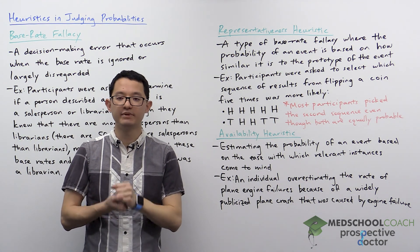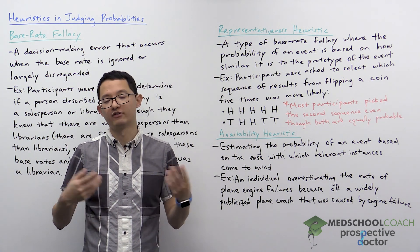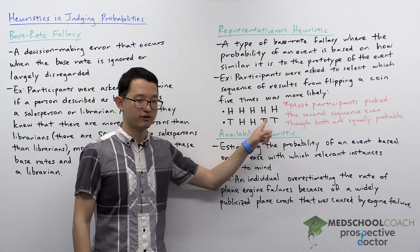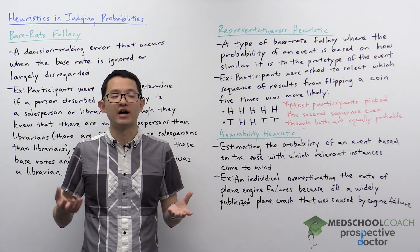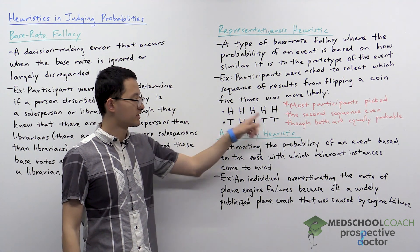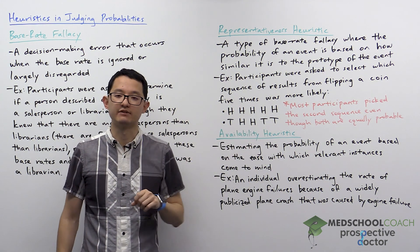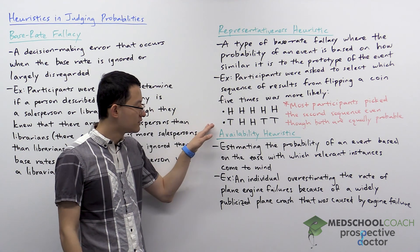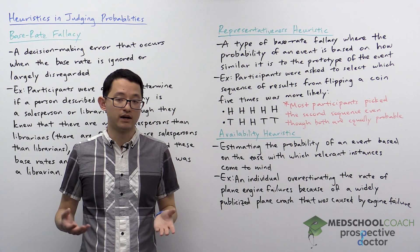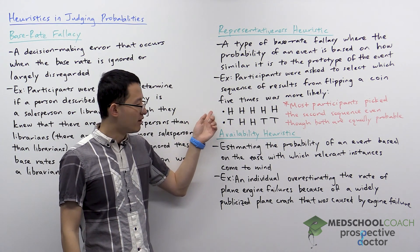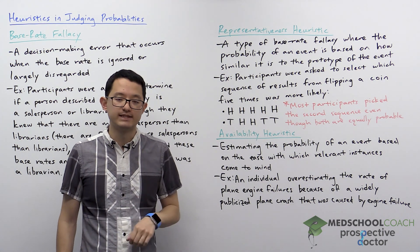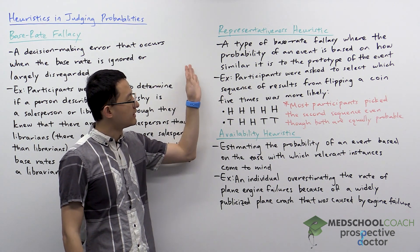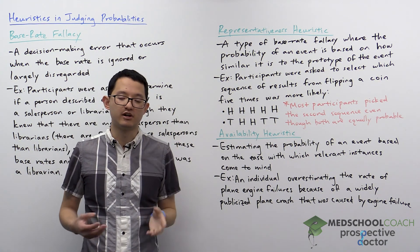As an example, we can consider flipping five coins. Here I have two possible results: five heads, or tail heads heads tail tail. For most people, when they think about the prototype of the results of flipping five coins, they would think it looks something more like the second sequence and not the first. And indeed, when participants were asked to select which sequence of results is more likely, most picked the second sequence. The problem, however, is that when it comes to probability, both of these sequences are equally probable. This is an example of how a prediction is incorrect because the individual used how similar the result was to the prototype of the event to determine its probability.